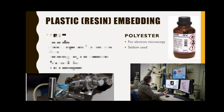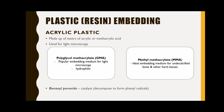Polyester plastics were originally introduced for electron microscopy in the mid-1950s but have been superseded by more superior epoxides and are now seldom used. We also have acrylic plastics which are made of esters of acrylic or methacrylic acid and are used extensively for light microscopy.